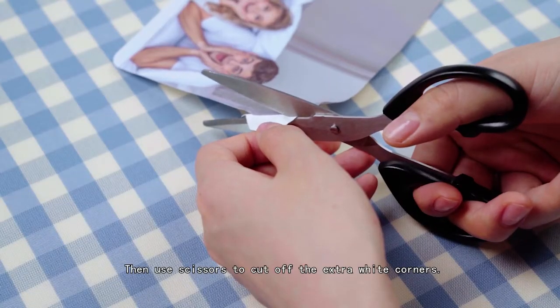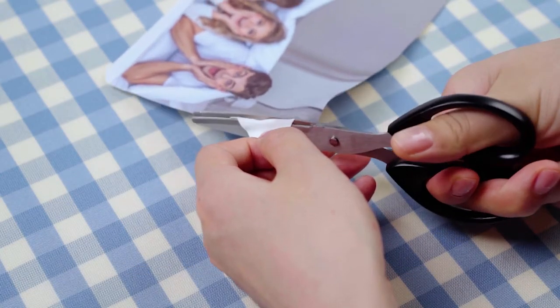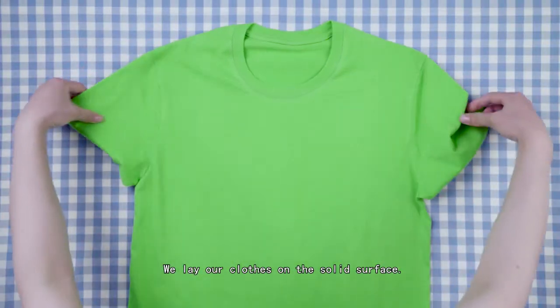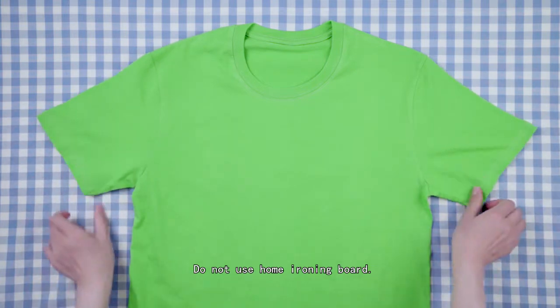Then use scissors to cut off the extra white corner. We lay our clothes on the solid surface. Don't use a home ironing board.